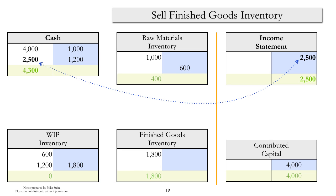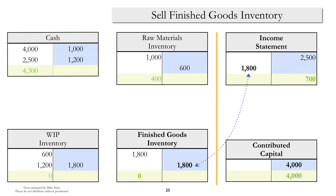When we sell the finished goods inventory, we first recognize some revenue — a credit to the income statement, which is a retained earnings account, and a debit to cash assuming we receive cash payment. We also recognize the cost of goods sold: a debit to the income statement for $1,800 and a credit to finished goods inventory for $1,800. Throughout this process we've maintained balance, with assets at $4,700 and equities at $4,700.